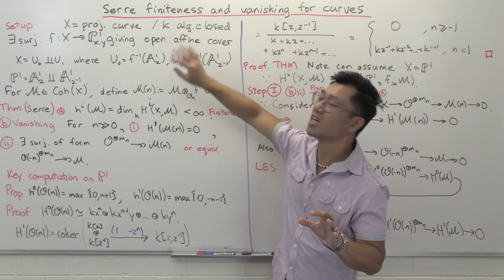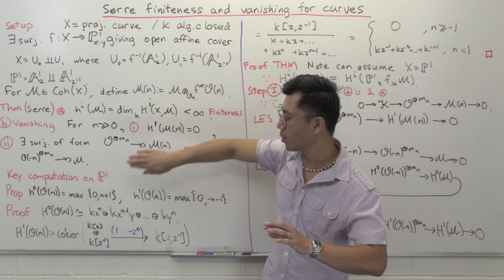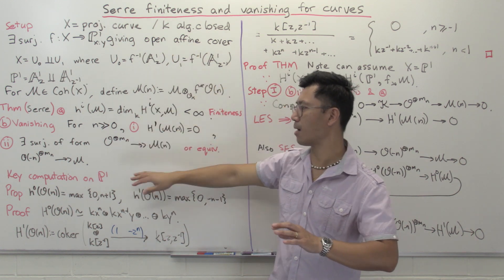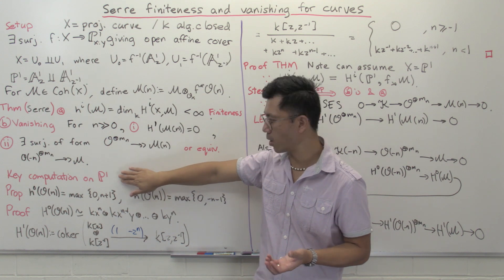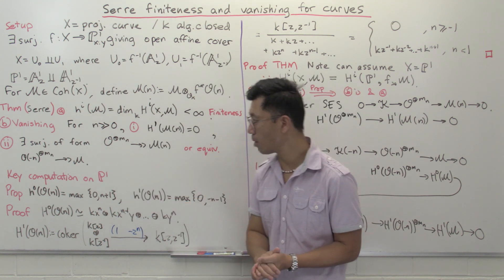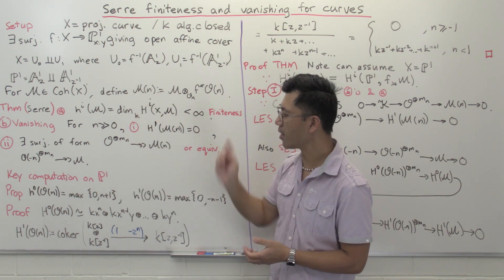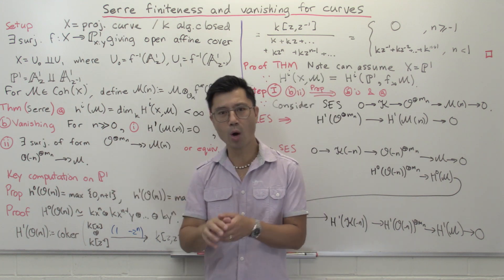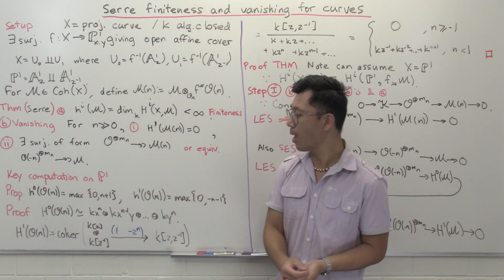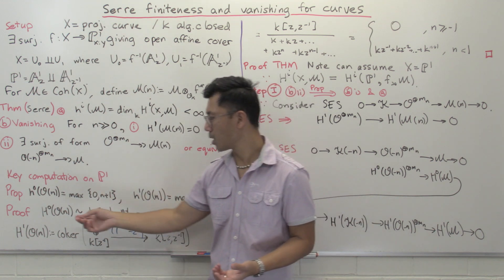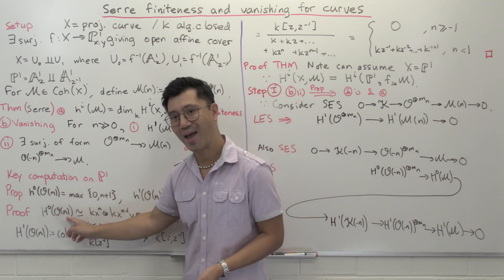The key point here is that we can compute everything nicely on P1. You can also set this up for P^n — the notation gets a bit more awkward, but there is an analogous theorem. Let me show you a key computation on P1 which will help you absorb what's going on. The first thing is the finiteness. It's quite easy to see with torsion sheaves — H1 is always 0, and H0 has finite-dimensional global sections.